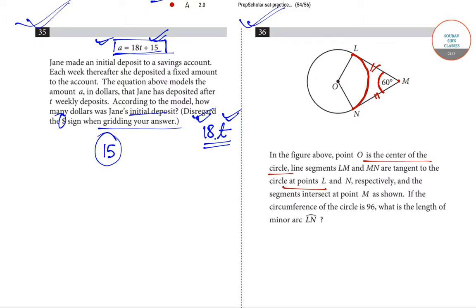Since segments LM and MN are tangent to the circle at points L and N respectively, angles OLM and angle ONM will equal 90 degrees. Because we know that at the point of tangency, the line segments make an angle of 90 degrees with the center. If you look at this portion, that is LOMN or OLMN.